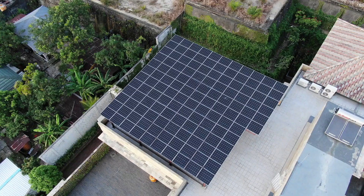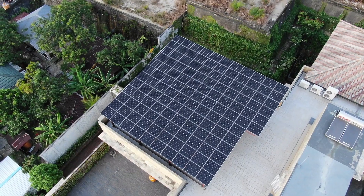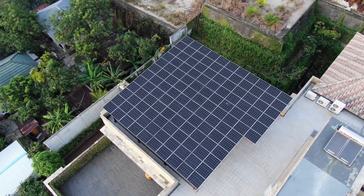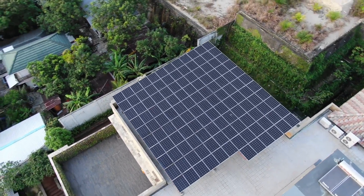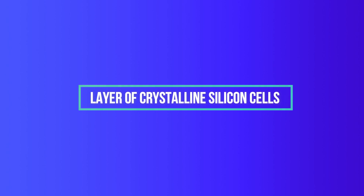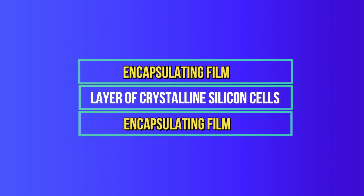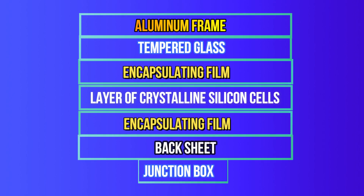But what can we do with the panels at the end of their useful life? A solar panel is made up of different layers. The inner part is a thin layer of crystalline silicon cells. These cells are surrounded on both sides by sheets of polymers and glass, as well as an aluminum frame.